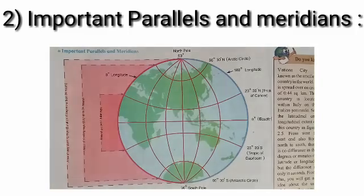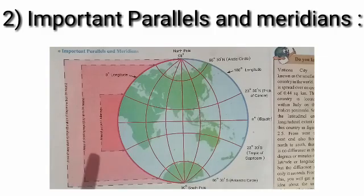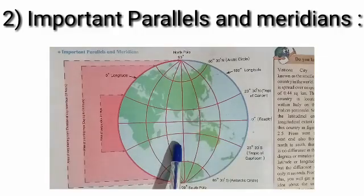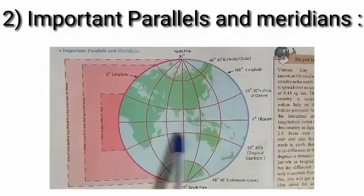The second one is Tropic of Capricorn. The parallel at 23 degrees 30 minutes south of the equator. This line is Tropic of Capricorn.